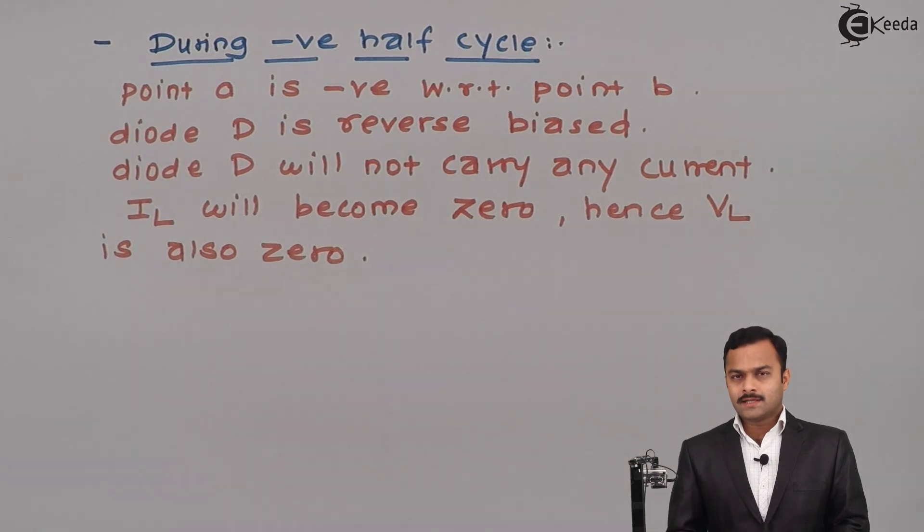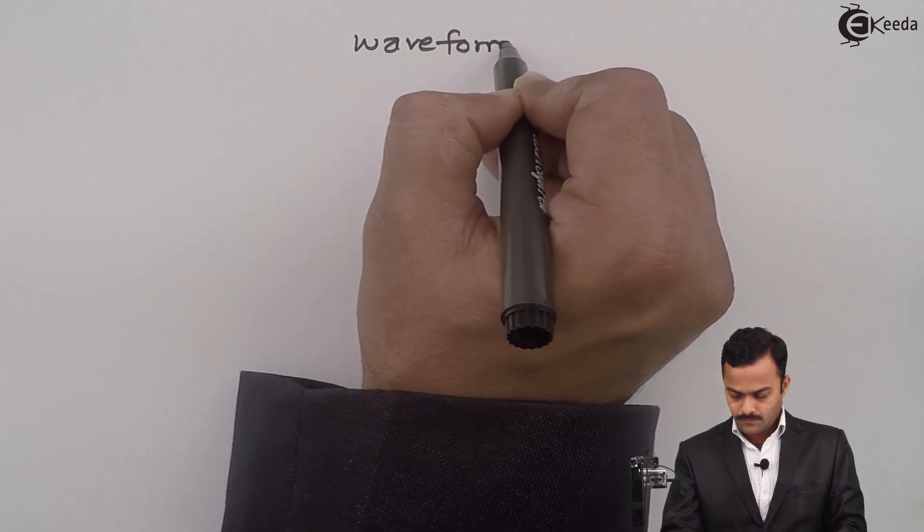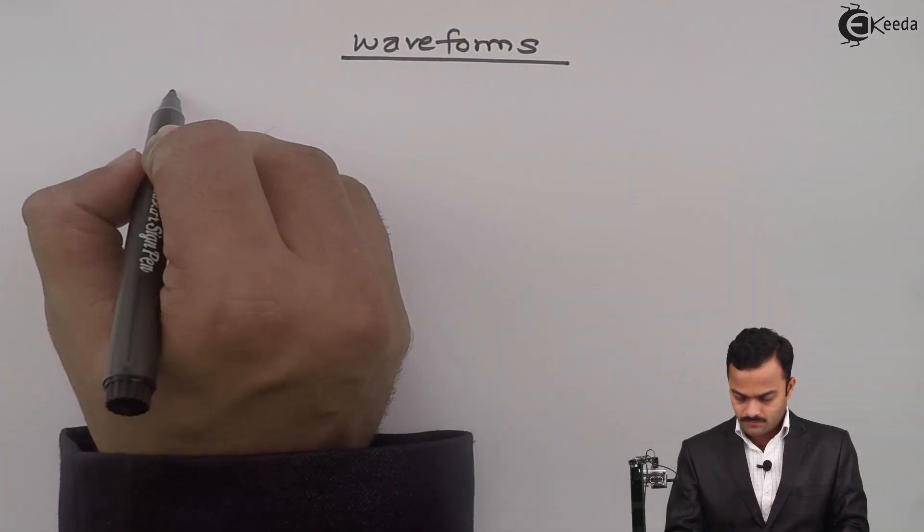This is what you will get during the negative half cycle. If you would like to combine all this into one waveform, let's draw waveforms.